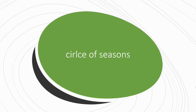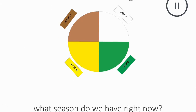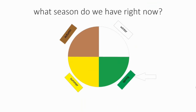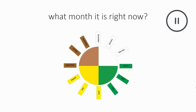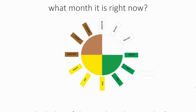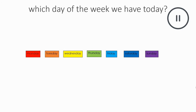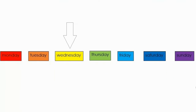Let's work with our circle of seasons. What season do we have right now? Spring. What month do we have right now? April. Which day of the week do we have today? Wednesday.